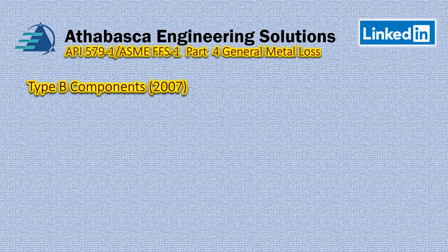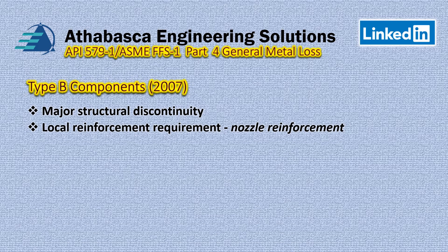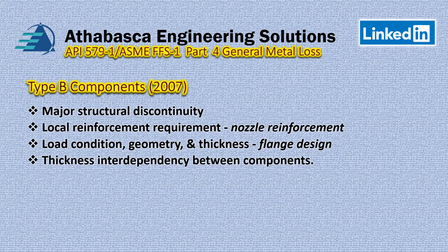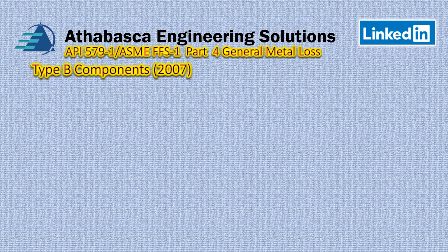Looking at Type B components in the 2007 edition — in the latest version they just have one group called Type B. It refers to structural discontinuities, major discontinuities, and local areas where there are local reinforcement requirements, such as a nozzle or reinforcement for area replacement calculations. We also have load-conditioning geometry, thickness, flange design, or thickness interdependency between components.